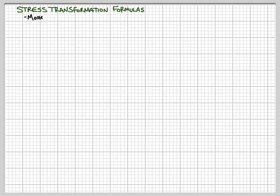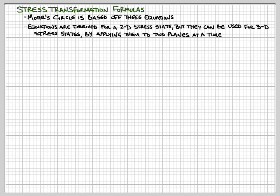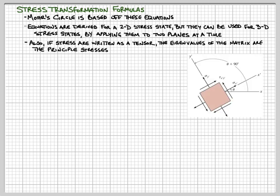There are equations that go along with this, and Mohr's circle is based on these equations. They are derived for a 2D stress state, but we can apply them to 3D stresses by doing one rotation at a time around one axis and stepping through to do additional rotations. Also, if we write our stresses as a tensor, the eigenvalues of the matrix — from linear algebra — are actually the principal stresses sigma 1 and sigma 2.